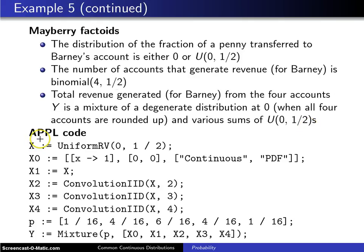So here is some APPL code to work out these values. If X is set to a uniform random variable with parameters zero and one-half, that takes care of this.